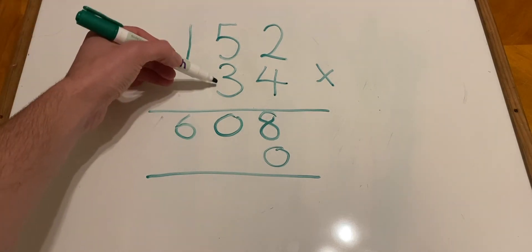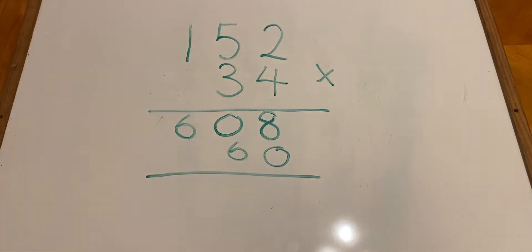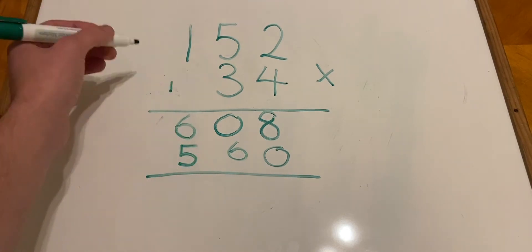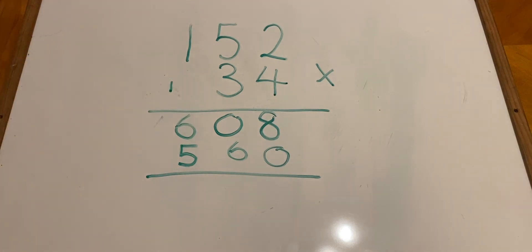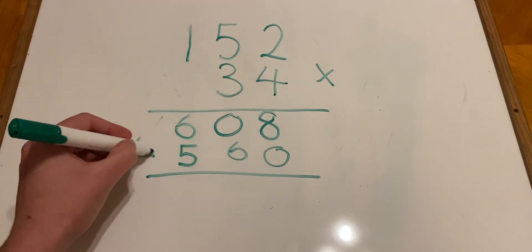Then we're going to do 3 times 2. 3 times 2 is 6. 3 times 5 now, and 3 times 5 is 15. So a 5 here and a 1 to add later. Now 3 times 1. 1 set of 3 is 3, but add this one more and we get 4.